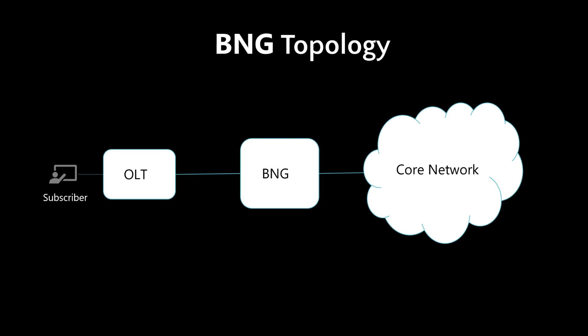A customary BNG topology would look like this diagram, where we have a subscriber connected to the OLT and then to the BNG box. BNG is then connected to the core, providing triple-A service and internet connectivity to the subscriber. On a normal day everything works well, but if a link failure happens between OLT and BNG, the subscriber faces severe service disruption until someone fixes the cable. Same is the case if a BNG crashes or fails — basically every link or node without a backup can fail. This is where RTBrick's HA solution is designed to remove almost all single points of failure in the BNG network.